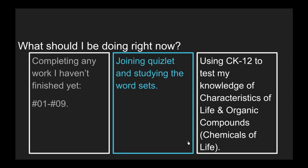So what should we be doing right now, now that all this is over? You should be completing any work you haven't finished yet, one through nine. And then hopping on to the classroom link to Quizlet, join the class, and there you've got word sets that you can study. And then, in addition to that, there's the CK-12 resources that you should explore, characteristics of life and organic compounds if you're not yet super familiar with the topic. And that will take us to the end of the period.